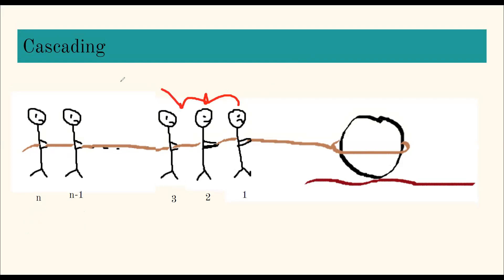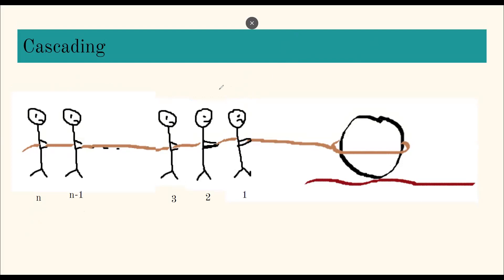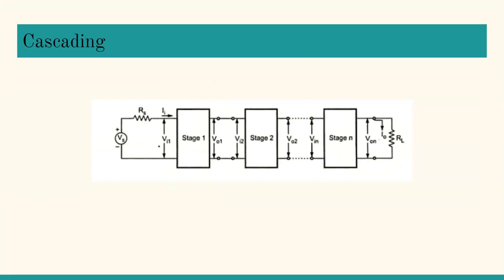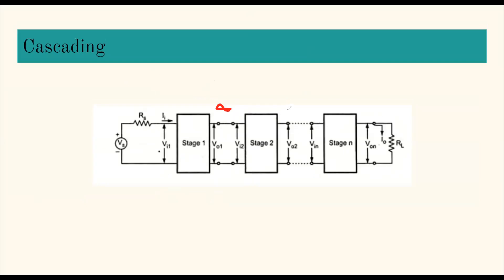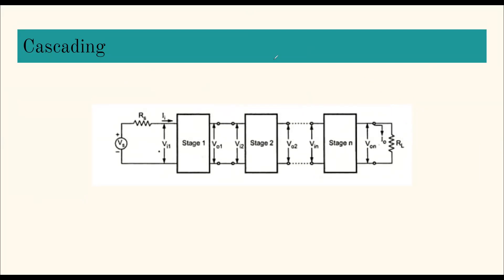The same concept applies in electronics. To get the desired signal strength, if a single stage amplifier is not enough, we cascade multiple stages. In your syllabus there are two stages covered: the single stage and the two-stage multi-stage amplifier explanation.